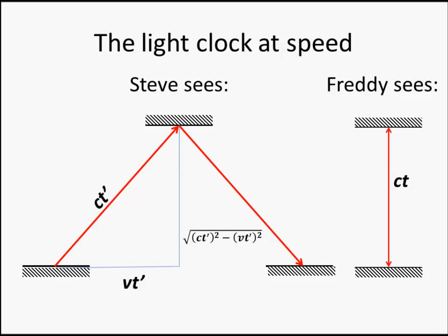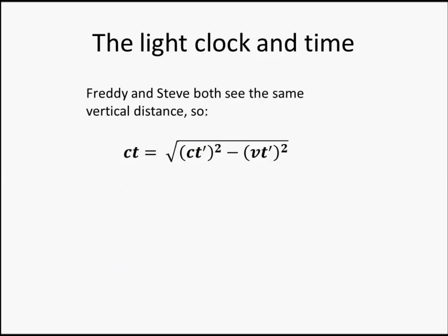So that's what Steve sees. What does Freddy see? Freddy sees what he always sees. The distance the light travels is CT, and that vertical length is the same for both Steve and for Freddy. So CT must be equal to the square root of CT squared minus VT squared. If we solve for T, we get T' equals T over the square root of 1 minus V squared over C squared. So here we can see one of Freddy's hallucinations. His measurement of time is out of whack.